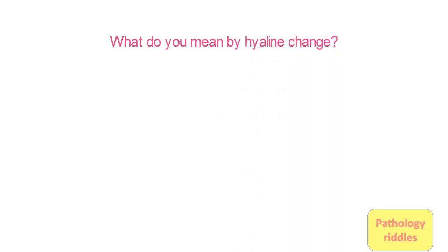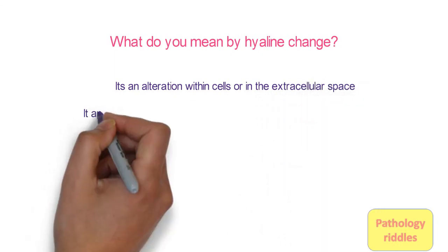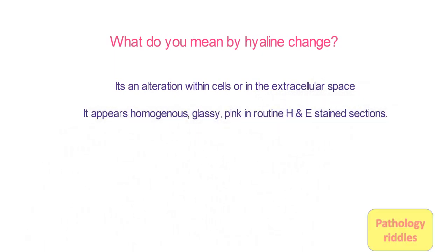Twelfth question: What do you mean by hyaline change? Hyaline change is an alteration within the cells or in extracellular space. It actually appears homogenous and glassy pink in routine H&E stained sections. Hyaline change is not just one change — it is basically when you see in H&E stained sections that the whole thing has become eosinophilic and uniform; then you call it hyaline change.